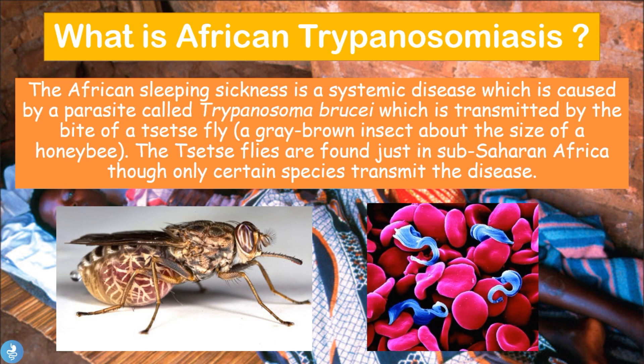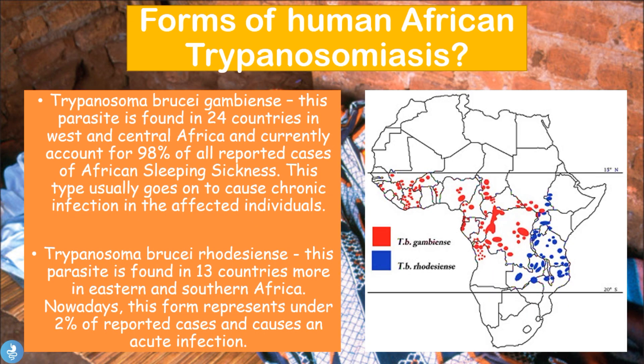Now that we know the basics of African trypanosomiasis, let's take a closer look at the two forms of the disease. There are two main forms of the Trypanosoma brucei species known for causing human disease: Trypanosoma brucei gambiensi and Trypanosoma brucei rhodiensi.